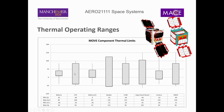If you buy a component to go on a spacecraft, it will tell you what these limits are. Once you get outside the operating limit, your component will stop working — it will shut off. If you get outside your survival limits, it will break and won't be able to turn back on. You don't ideally want to go outside your operating range, but you definitely don't want to go outside your survival range, because at that point your spacecraft is going to be unrecoverable.